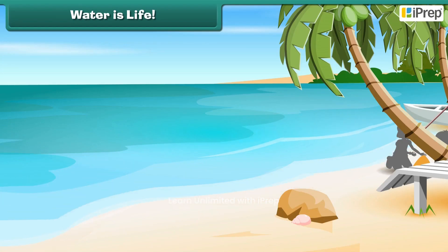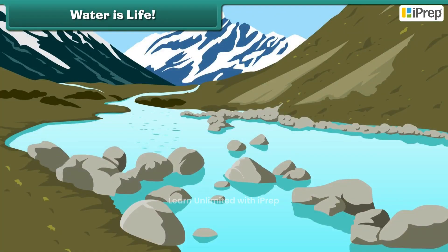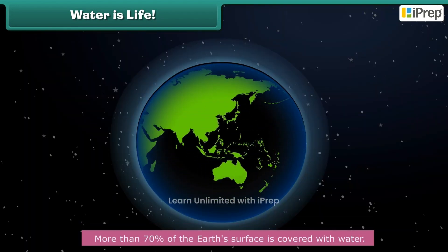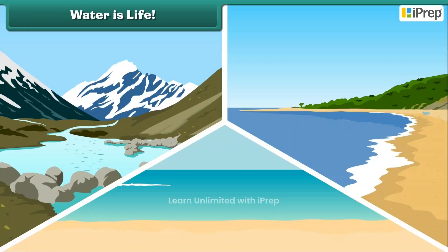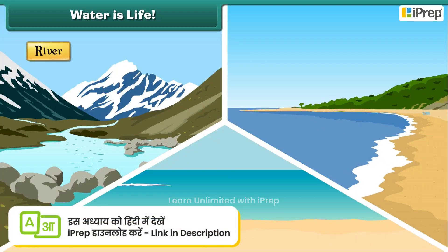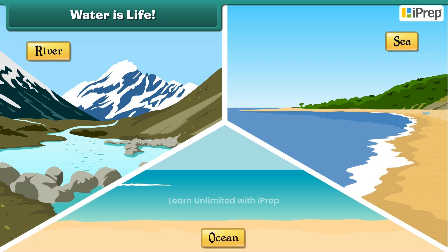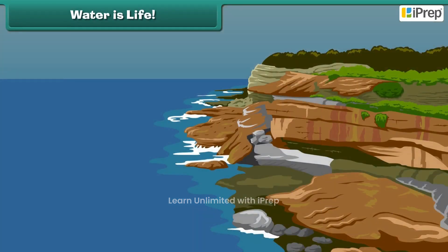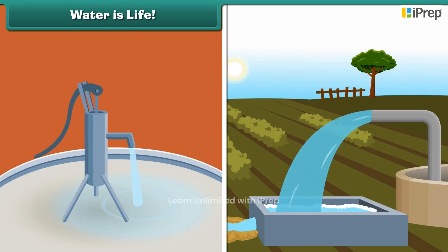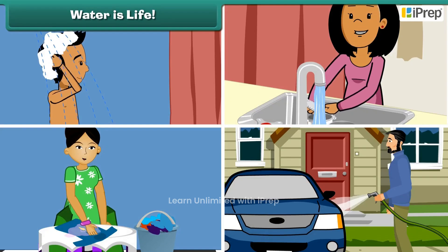Water is life. Water is an essential gift of nature. More than 70% of the Earth's surface is covered with water. It is found not only in rivers, seas, and oceans, but is also found as underground water. Despite many sources of water, the usable fresh water sources are very few. That is why we need to use water judiciously.